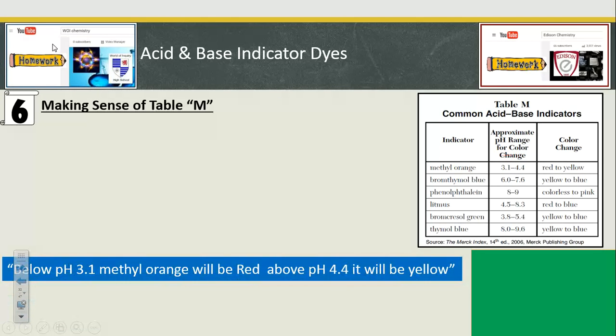So, below pH 3.1, methyl orange is going to be red, and above pH 4.4, it will be yellow. That's kind of like the textbook way of reading Table M.